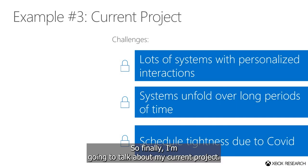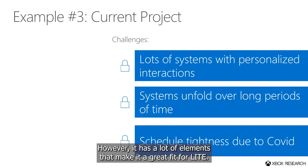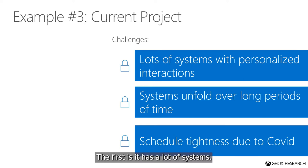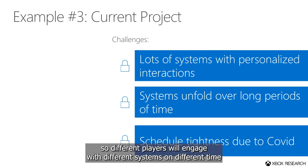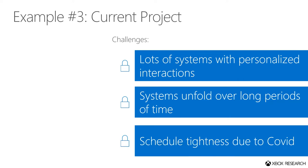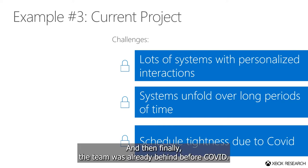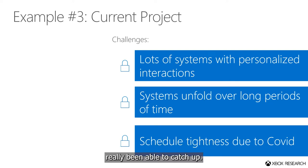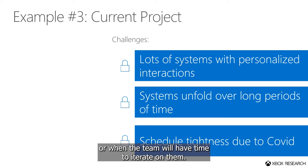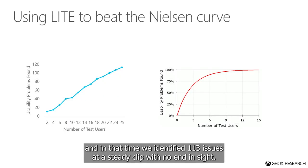Finally, I'm going to talk about my current project. This is an unannounced title, so I can't go into too much detail. However, it has a lot of elements that make it a great fit for LIGHT: it has a lot of systems, it's a game designed to adapt and provide customized experiences, and different players will engage with different systems on different time frames. It's also a long game — players won't encounter some systems until after hours of gameplay. The team was already behind before COVID, the transition to work from home magnified that, and they've never really been able to catch up. In the end, this LIGHT study ran a total of 25 participants across 13 sessions, and we identified 113 issues at a steady clip with no end in sight.